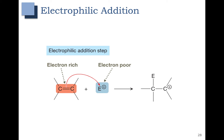Let's follow the electrons in this generic reaction. The carbon-carbon pi electrons, shown in blue, are going to come and form a bond to our electrophile. That means on the right we'll have a carbon-electrophile bond in blue. Blue electrons form a carbon-electrophile bond.